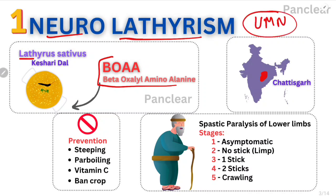Upper Motor Neuron type of lesion — there are two types of UMN lesions. With a UMN lesion, there will be spastic paralysis of the lower limbs — in both lower limbs there will be spastic paralysis — which is characteristic of UMN lesion. This is neurolathyrism, and it is common in the Chhattisgarh region of India.